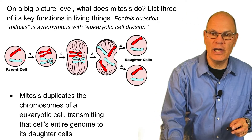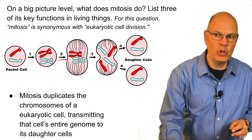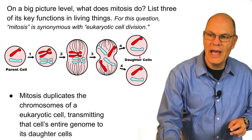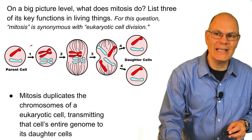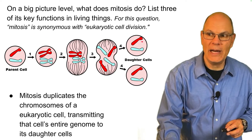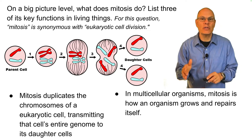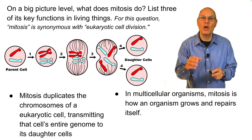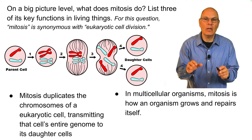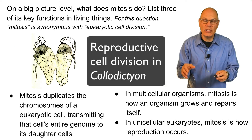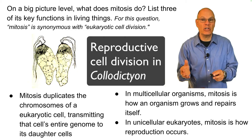Here you have the parent cell with two chromosomes. Those chromosomes have been duplicated, now they're being pulled apart, and you have daughter cells, each with two chromosomes. Each one is going to be an exact clone of its parent cell. In a multicellular organism like you and me, mitosis is how an organism grows and repairs itself. In a unicellular eukaryote, like a paramecium or an amoeba, mitosis is how reproduction occurs.